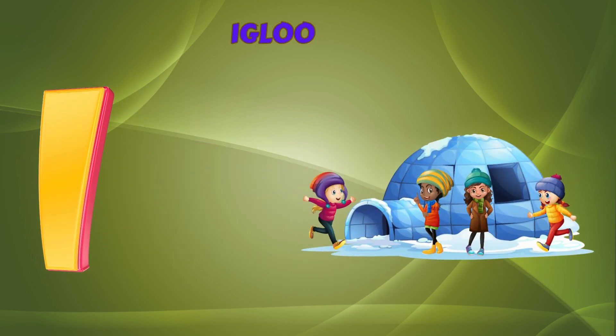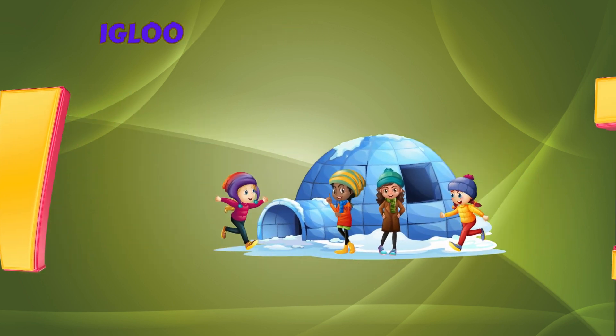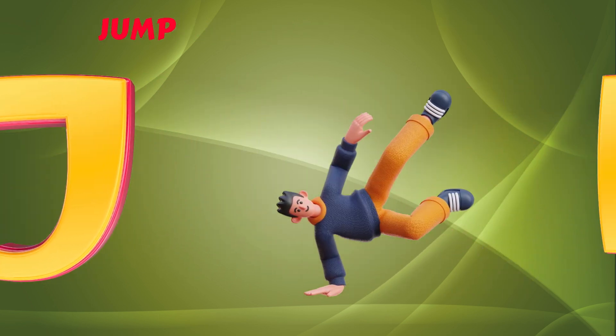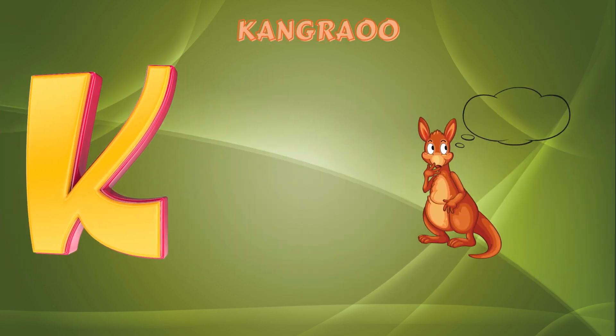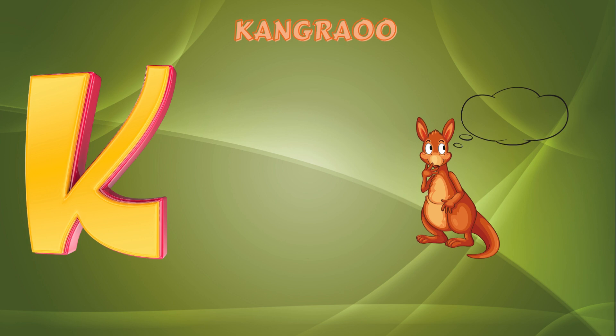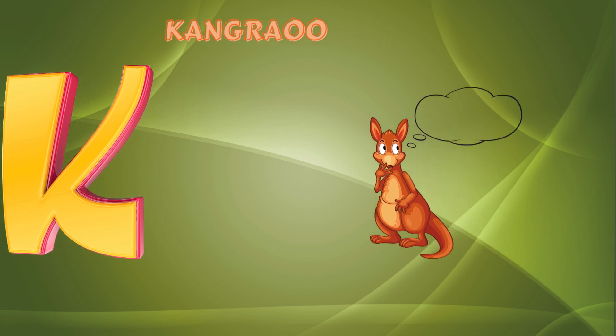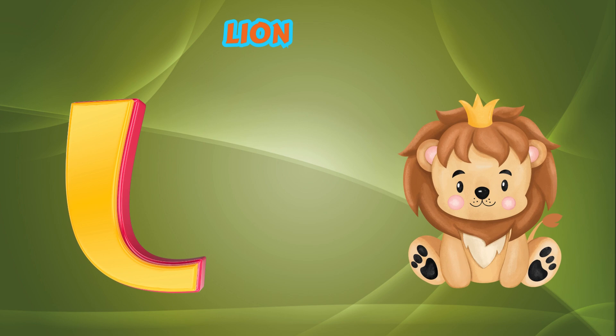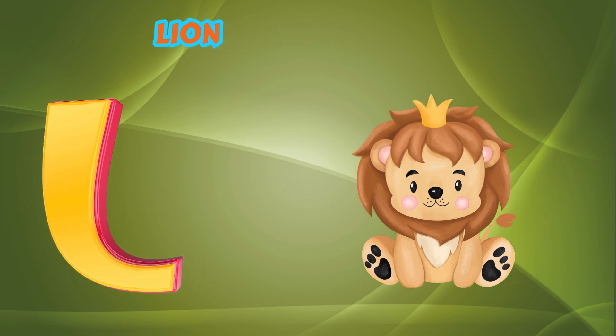I is for Igloo. I-I-Igloo. J is for Jump. J-J-Jump. K is for Kangaroo. K-K-Kangaroo. L is for Lion. L-L-Lion.